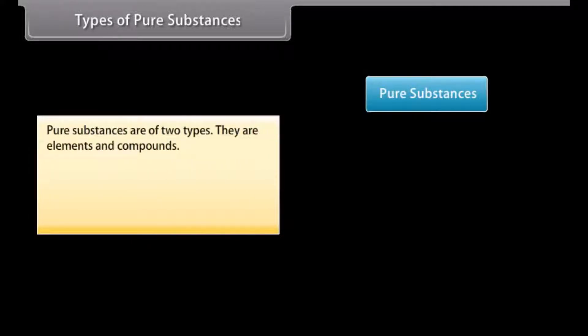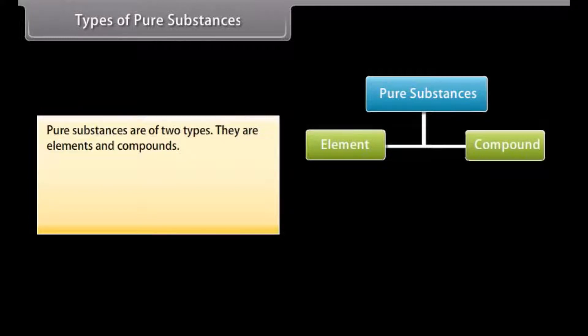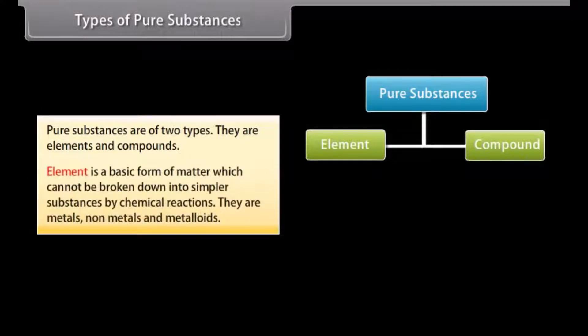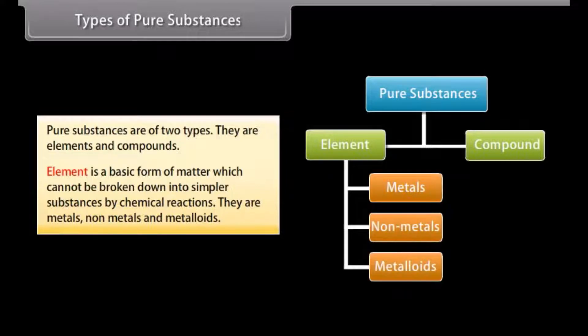Types of pure substances. Pure substances are of two types: elements and compounds. Element is a basic form of matter which cannot be broken down into simpler substances by chemical reactions. They are metals, non-metals, and metalloids.